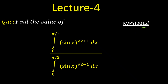We have to find the value of these two integrals as a ratio. The numerator is the integration from 0 to π/2 of sin(x) raised to the power (√2 + 1) dx, and the denominator is the integration from 0 to π/2 of sin(x) raised to the power (√2 − 1) dx. Feel free to pause the video and try this question. We'll solve this on the next page.